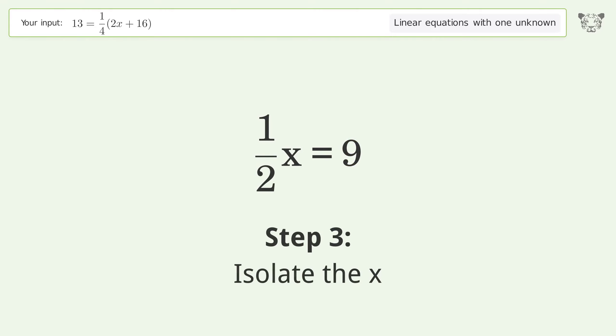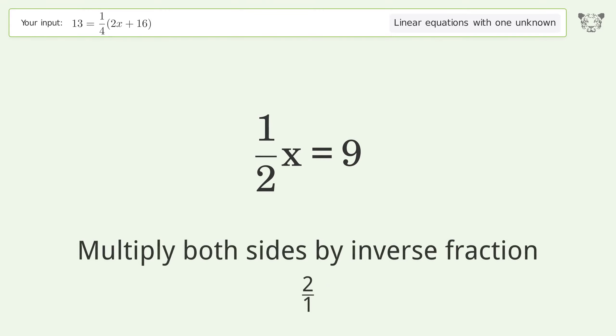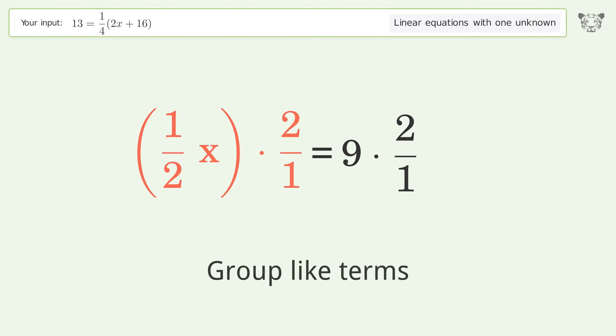Isolate the x. Multiply both sides by inverse fraction 2 over 1. Group like terms.